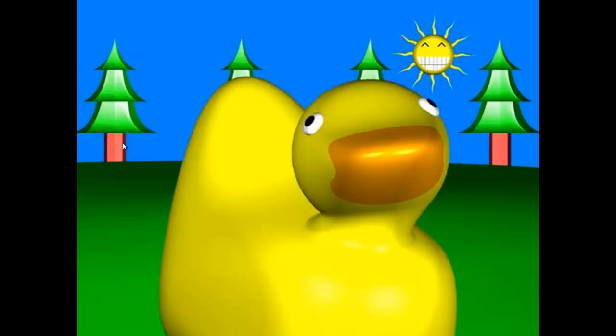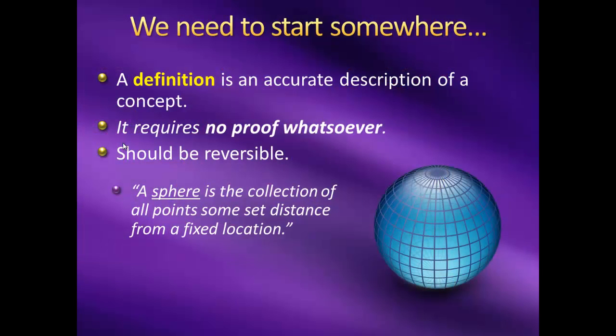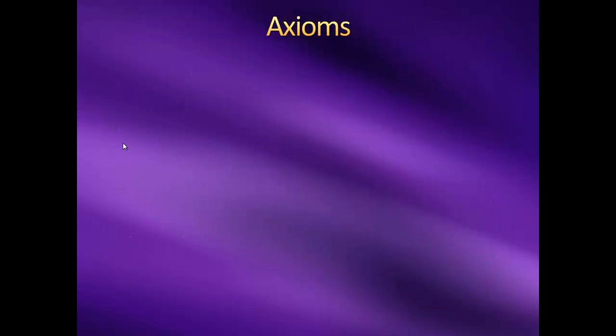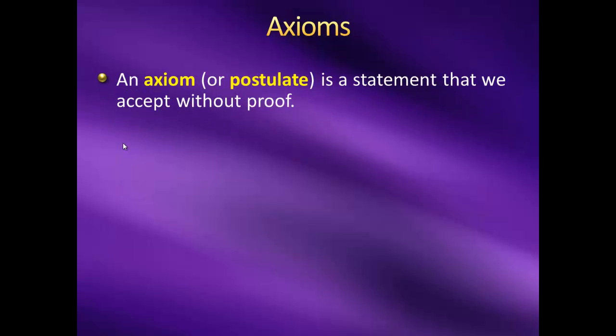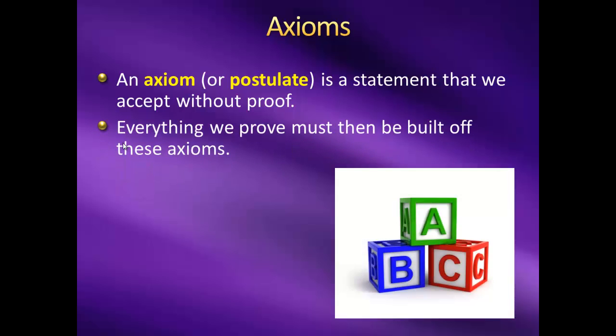So, if I've found a collection that happens to be all the points that are some distance away from a fixed point in space, then it must be able to be called a sphere. Once we have our definitions all taken care of, we often need to make some initial assumptions about them. These assumptions are called our axioms. An axiom, also called a postulate, is a statement that we accept without proof. For example, when we're working with the real numbers, we assume that addition and multiplication are commutative and associative. Once we have these axioms, everything we prove must be built off of them.